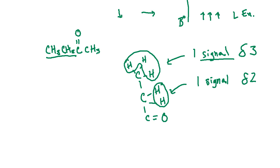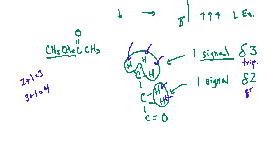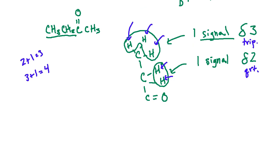How do we determine triplets, quartets, and so on? We use the n+1 rule: take the neighboring number of protons and add one. For this methyl group, it has two neighboring protons, so n=2, and 2+1=3, making it appear as a triplet. For the methylene CH2, it has three neighboring protons, so 3+1=4, meaning we get a quartet.